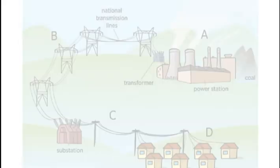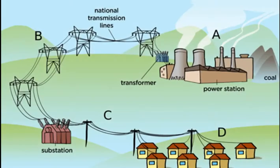Before starting, I will explain in short with the help of this diagram how we get AC supply to our homes. First of all, the electricity generated at the power station is transmitted through long distance transmission lines. At the generation site there is a step-up transformer, which is used to increase the voltage level.